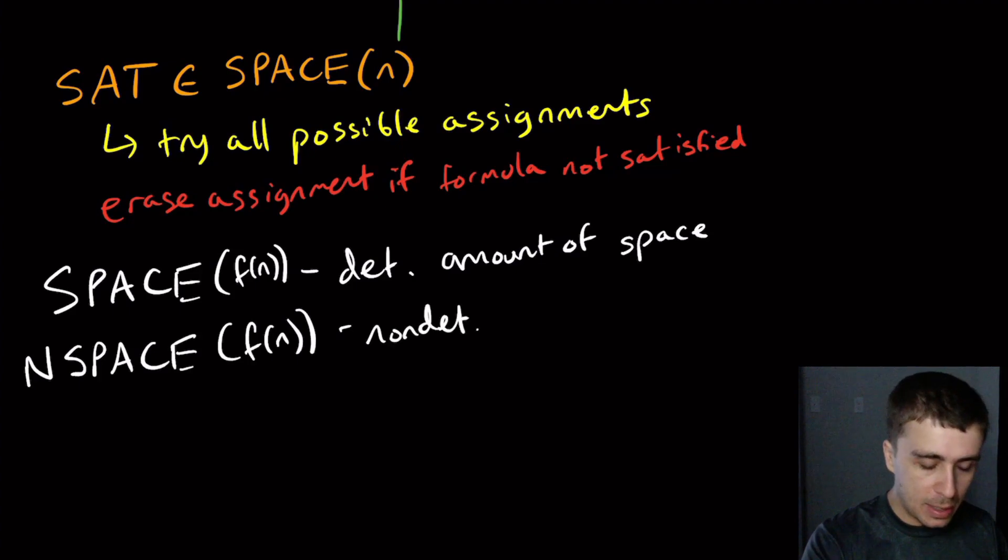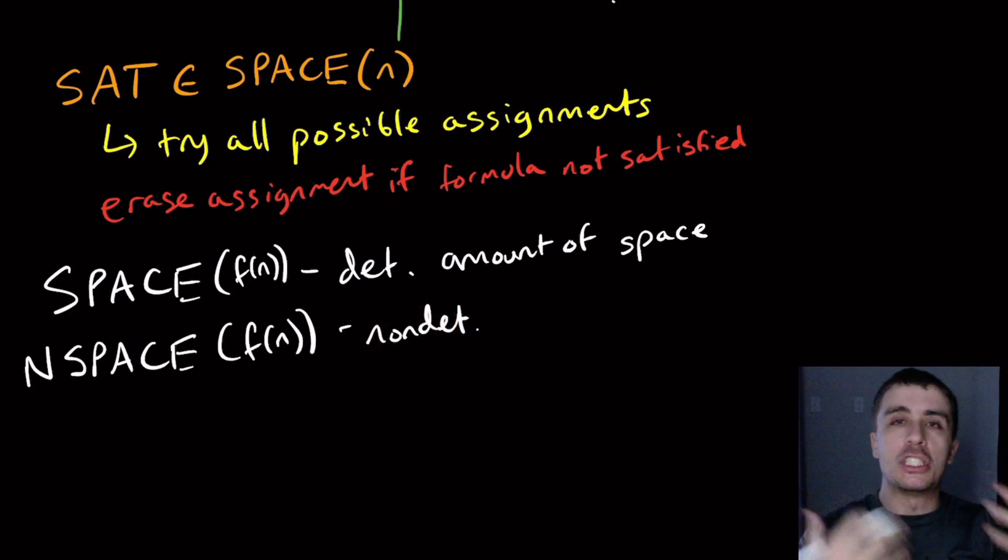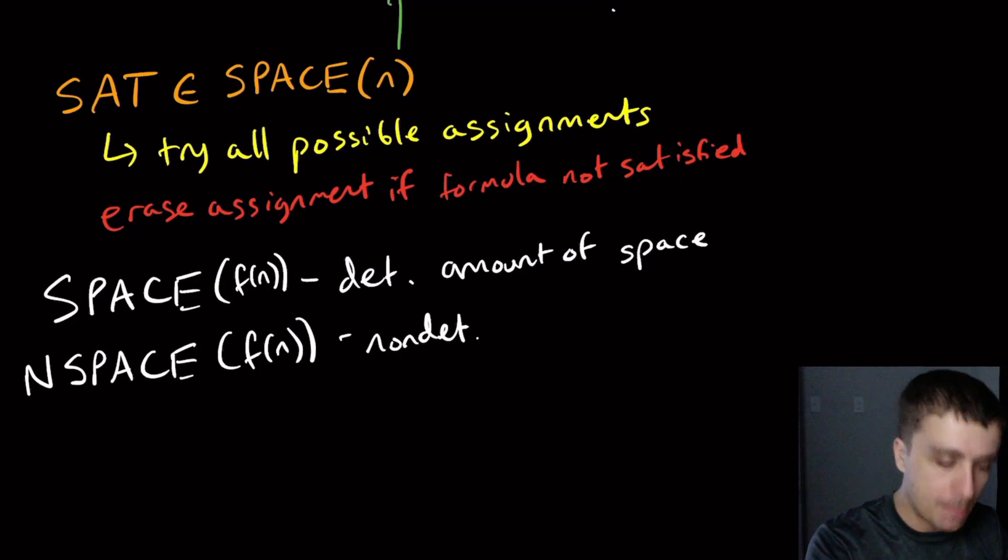There's a little bit of an issue here because there are choices that can be made. But what we do is we just take the maximum over all inputs of size n across all choices of non-determinism that can occur. So it's exactly the same thing as non-deterministic time, where we looked at how much time was used over all possible choices. So this is the same thing here, but just with space instead of time. So non-deterministic amount of space.